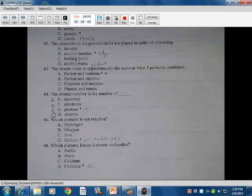43, the atomic mass is approximately the same as twice the number of particles combined. So when you combine those two particles, which are they? So protons and electrons are the basis of most of the atomic mass. A there. 44, atomic number is the number of protons, which is C there.